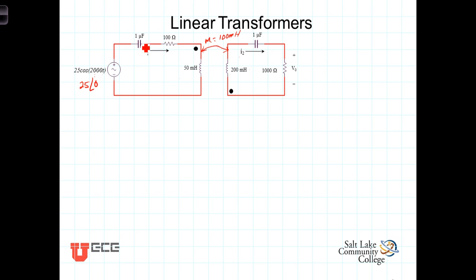Now we've got capacitors, both are one microfarad capacitors so the impedance of the capacitors will be equal to 1 over j omega c. Again omega is 2000 so 1 over j omega c gives us minus j500 for the impedance of those two capacitors.